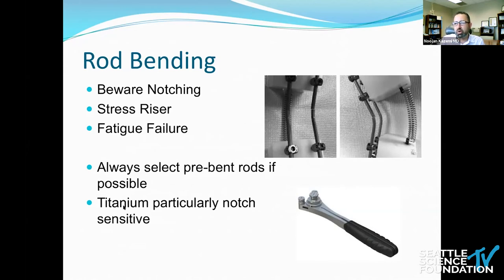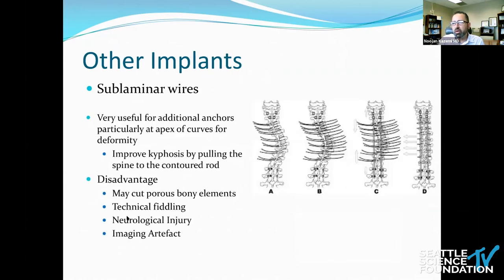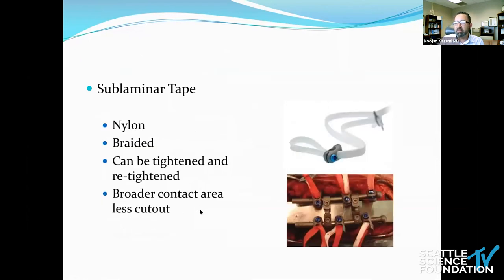There are other implants to achieve correction across a curve. Sublaminar wires are very useful for adding additional anchors, particularly useful for coronal corrections as well as kyphosis, by pulling the spine to the contoured rod. The problem is they may cut bony elements because they're sharp, and there are imaging issues. This led to the concept of a sublaminar tape, which distributes the load across a braided nylon tape, providing broader contact and less cutout.